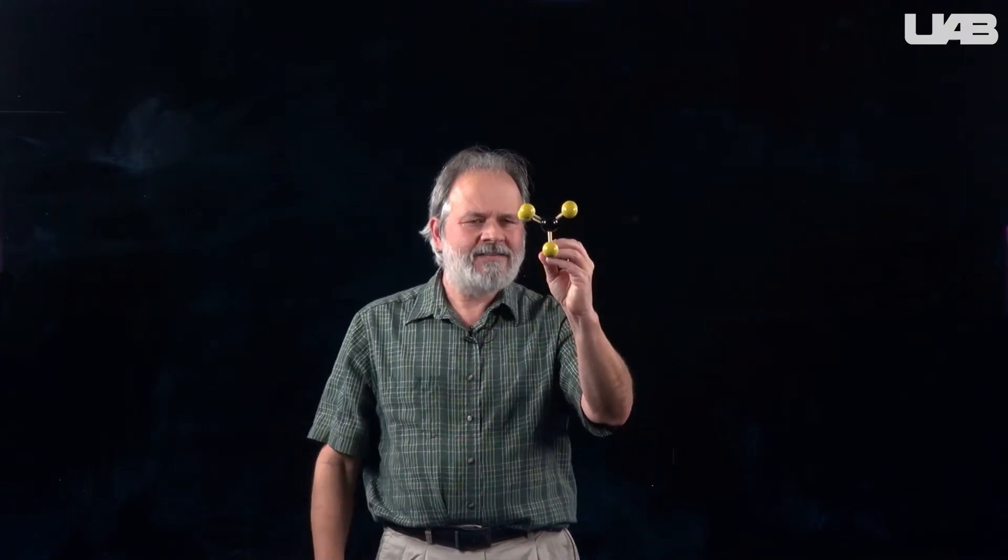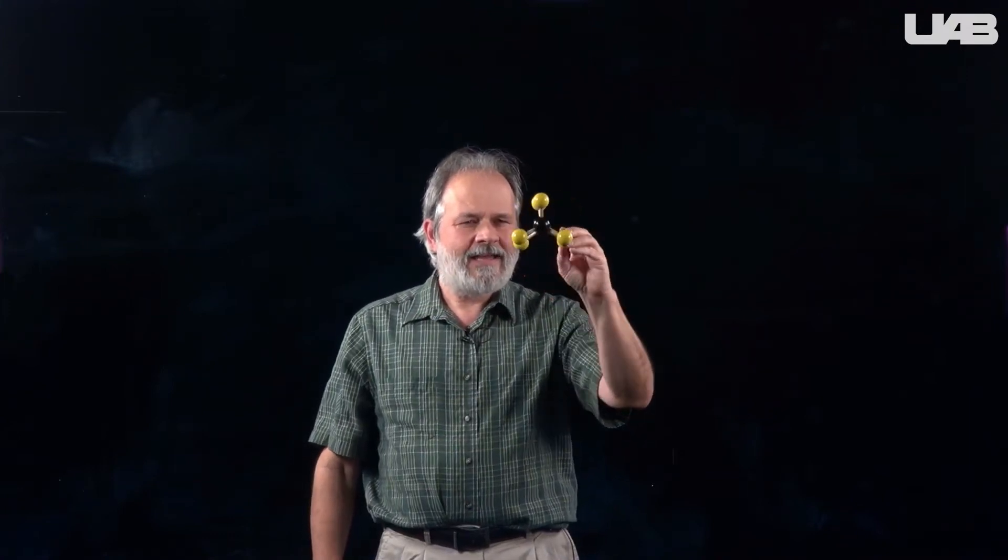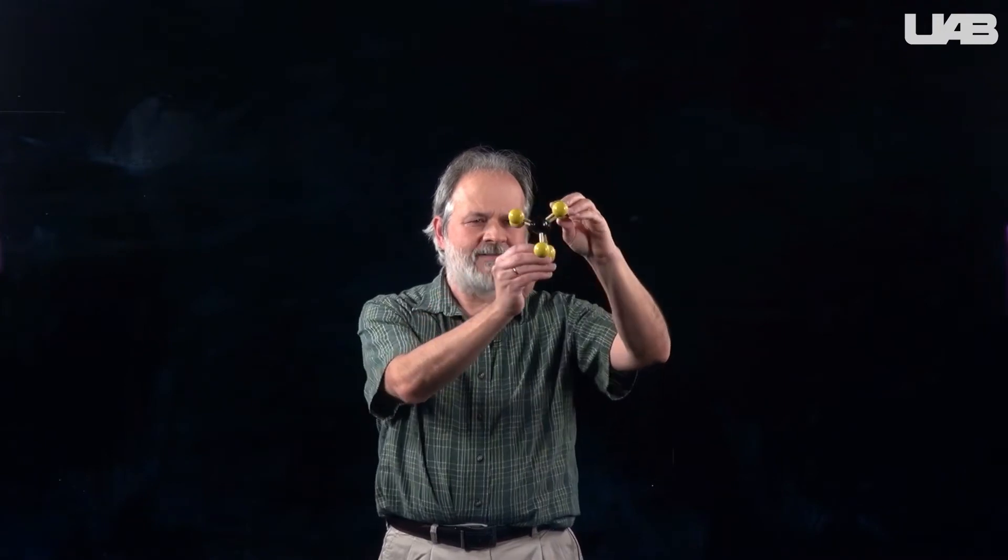So the next thing you need to look for is a high order axis. You can see that this guy has a three-fold rotation axis. You can rotate it three times to get it back to the original position. So that is called a C3 axis.